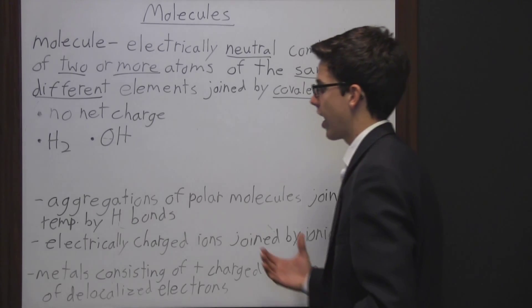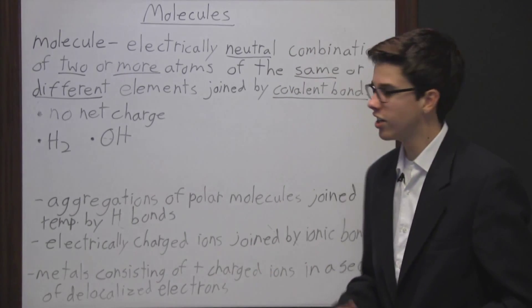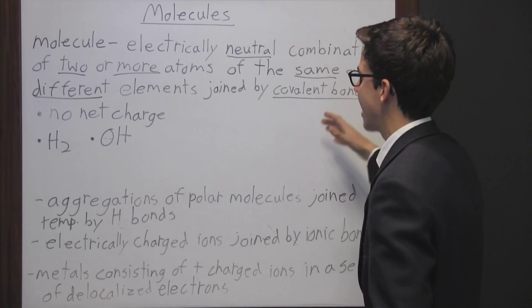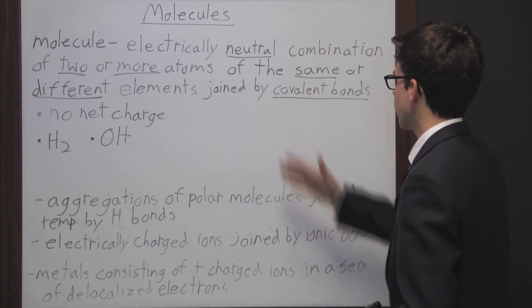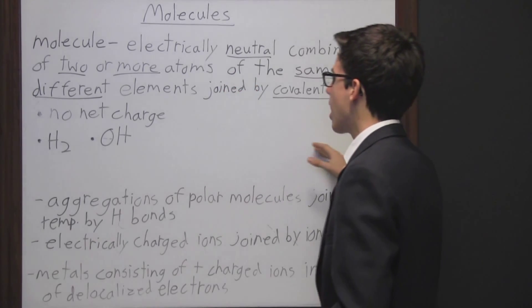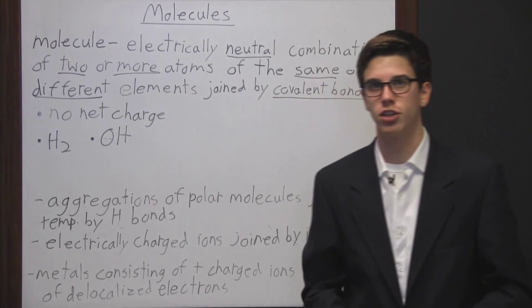So generally when you have a definition of something, it just usually is maybe twofold. Here there's lots of different criteria something has to meet in order to be a molecule. So you want to be able to remember all these so that you can see a substance, learn a little bit about it, and be able to identify if it is indeed a molecule.